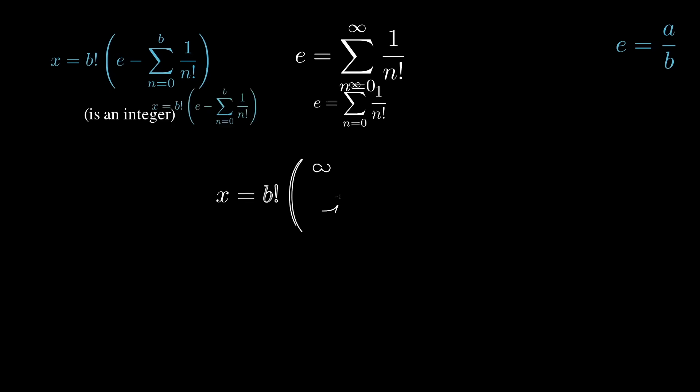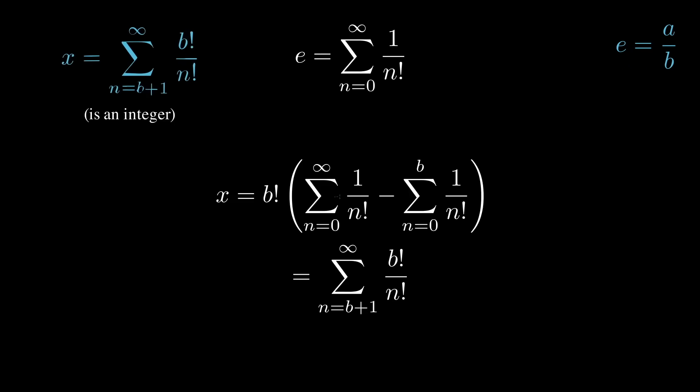Let's substitute our other representation for e into x, this infinite sum. Both of these are really summing the same thing, it's just the first one being infinite, the second one only up to b. We could distribute this b factorial and combine these sums, just summing from b plus 1 up to infinity.